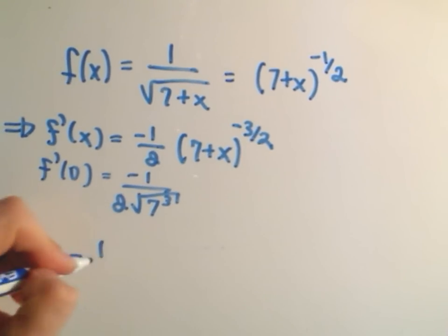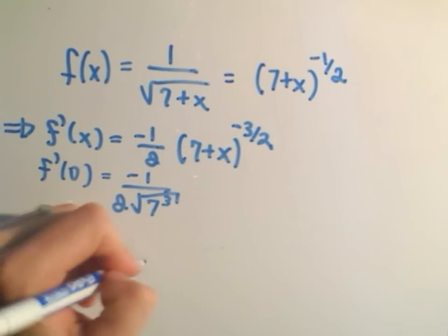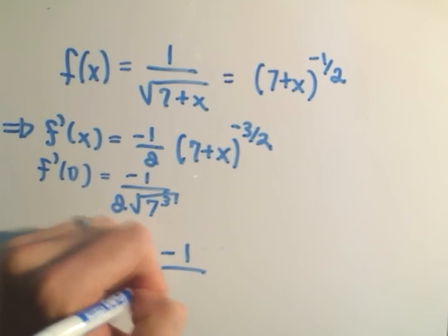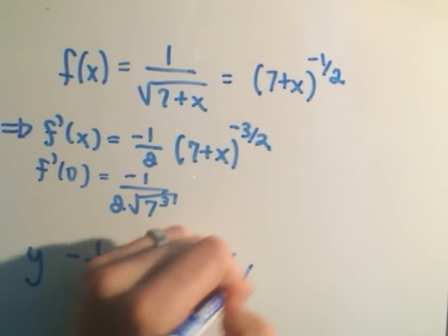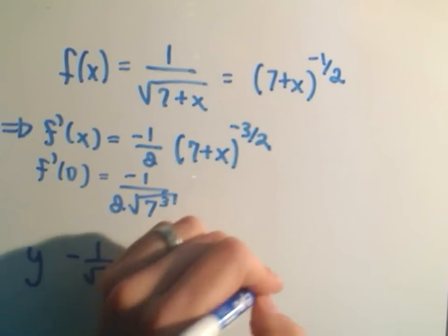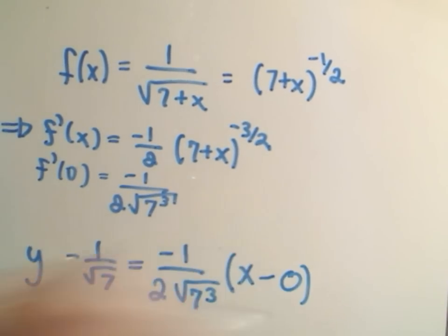Our point, it's y minus 1 over root 7. The slope now is negative 1 over 2, the square root of 7 cubed. And then x minus the x coordinate, which, again, was 0 in this problem.